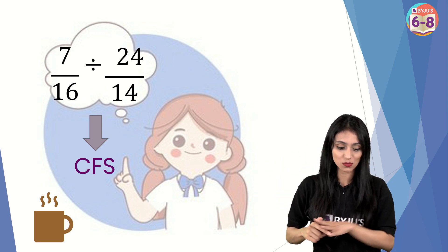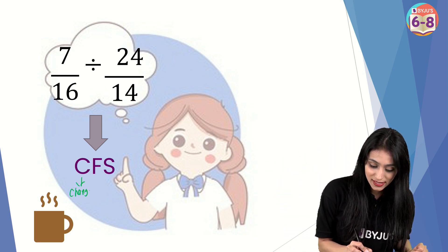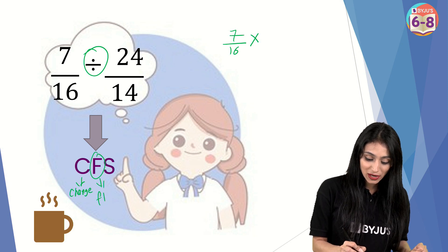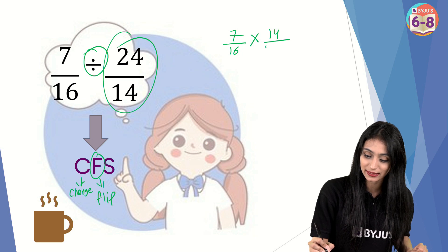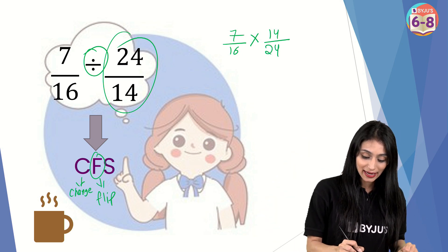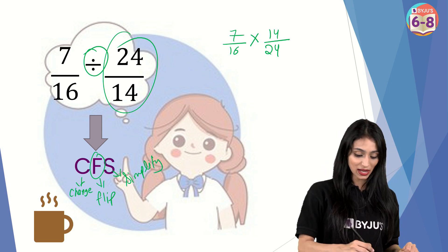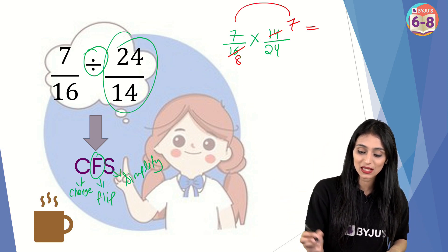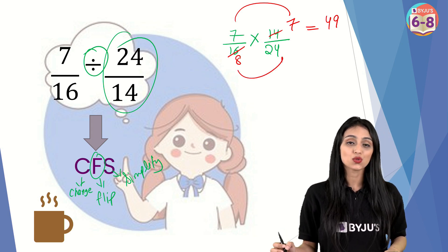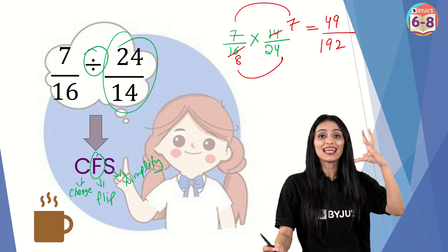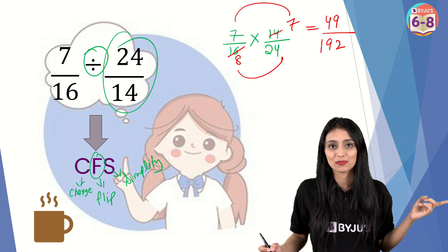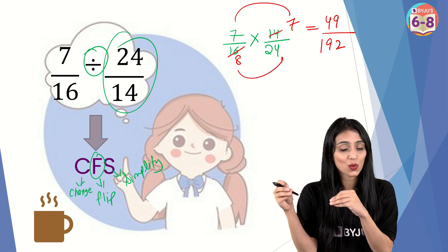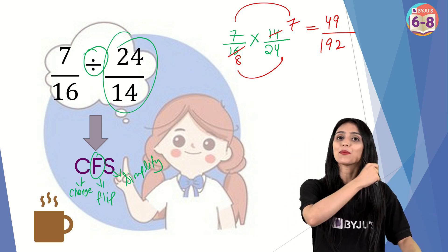Coffees ko humne kya banaya tha? CFS. C stands for change — change the symbol. So sab se pehle hum kya karte hain? Symbol ko change karte hain to multiplication. F stands for flip — then we flip this fraction, matlab reciprocate karte hain, uska opposite, reciprocal lete ho. And S stands for simplify — aur ab jo bhi aaya usko simplify karte hain. Simply hum isse cut karenge: two eights, two sevens. Aage cancel out nahi ho sakta. Simply hum isse multiply karte hain — seven with seven, that's 49; eight with 24, that's going to be 192. So you see, ek meaningful group create karo — interestingly yaad rehta hai humne class mein kya padha tha. These ideas may seem strange or a little crazy, but trust me agar aap isko karna shuru karo, bohut jagah aapko bohut easy lagega yaad karna.